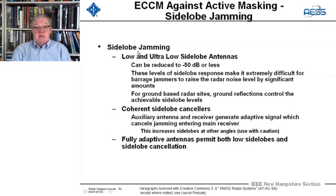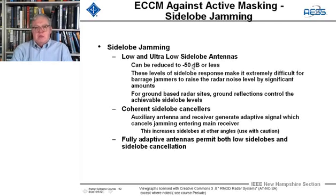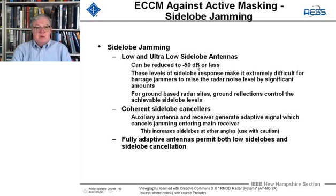For side-lobe jamming, the best approach is achieving ultra-low side-lobes on the main antenna — particularly with slotted arrays or non-phased arrays. Going to ultra-low side-lobes, down 50 dB, makes it very hard for barrage jamming to be effective. On ground-based sites, ground reflections can limit achievable side-lobes, but the improvement is still significant — roughly 30 dB advantage over conventional 20 dB side-lobe levels.